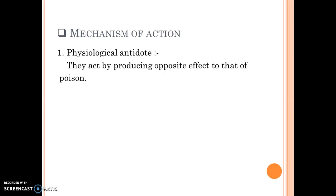Now we study the mechanism of action of each class of antidote. The first class of antidote is the physiological antidote. Physiological antidotes act by producing opposite effect to that of poison. To understand that, take one example: if a poison increases the blood pressure, then the physiological antidote decreases the blood pressure and neutralizes the effect of poison.